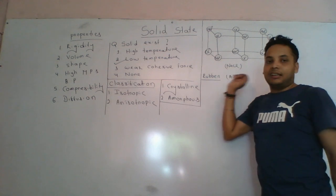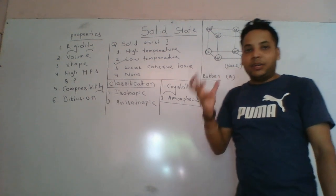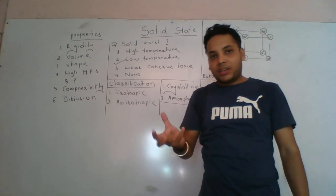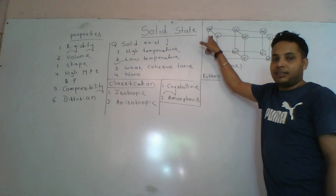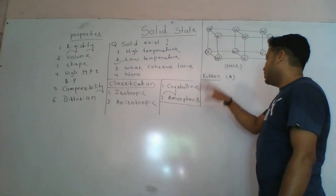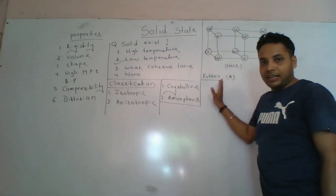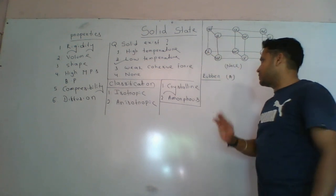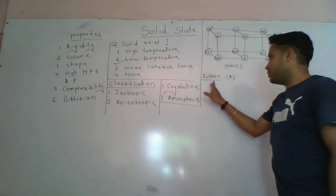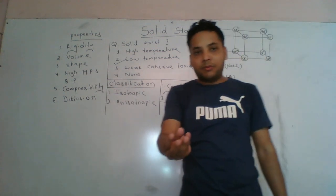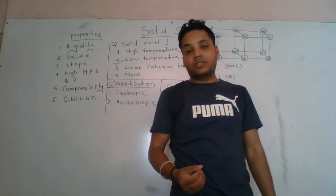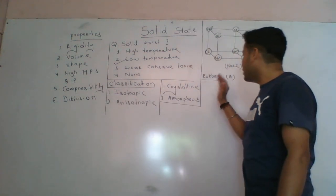Examples of crystalline solids: NaCl, diamond, graphite. These are crystalline solids. But amorphous solids do not have a regular arrangement — examples include glass, chalk, and duster. This is not covered in the next video.